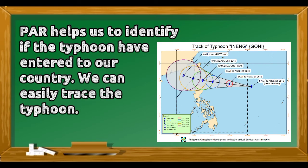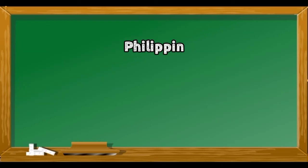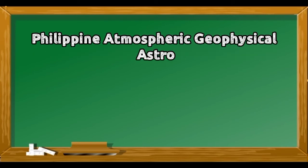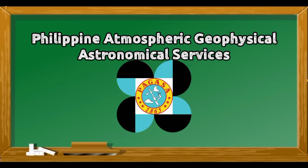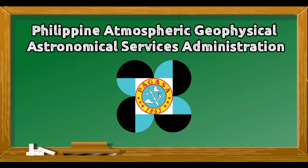The Philippine Area of Responsibility is used by the Philippine Atmospheric, Geophysical, and Astronomical Services Administration, also known as PAGASA. This government agency helps warn us about typhoons.